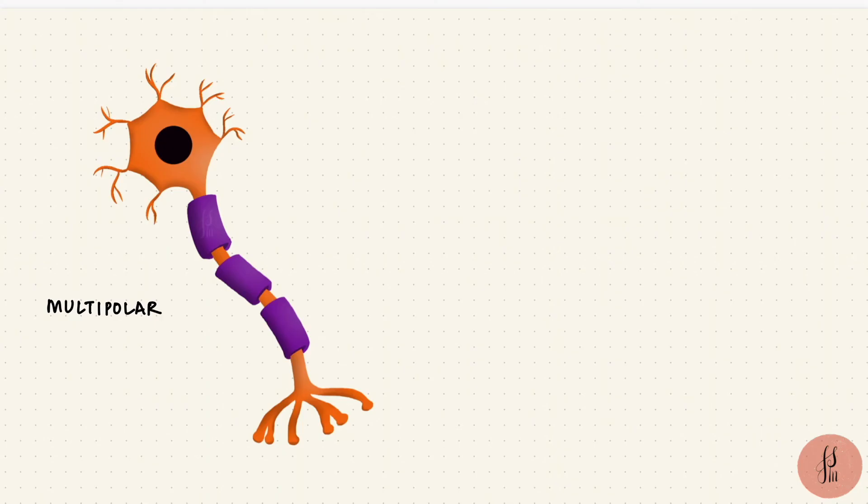Now all of this was a multipolar neuron. It's got a cell body, multiple dendrites, and a single axon. That's most neurons of the body, like motor neurons. And that is why we've been drawing it since what feels like elementary school.